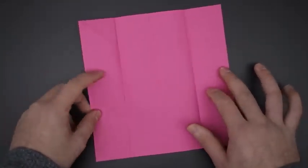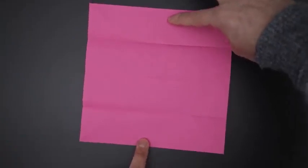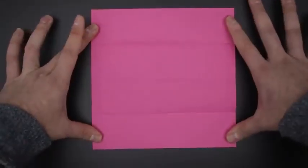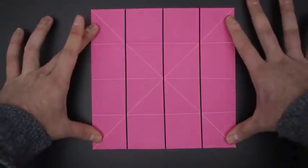For the next step, we'll have to rotate, and repeat the same logic, dividing into four one more time. With that the paper will be divided into 16 small squares.